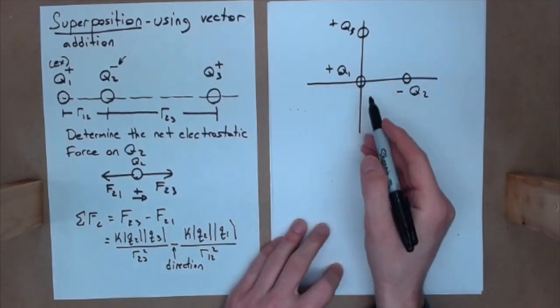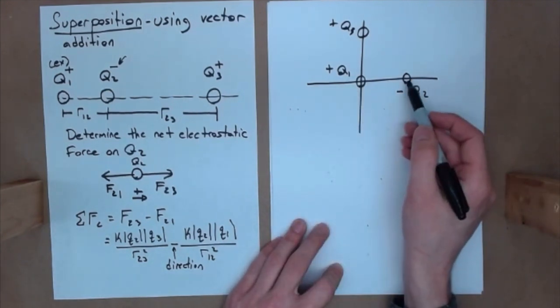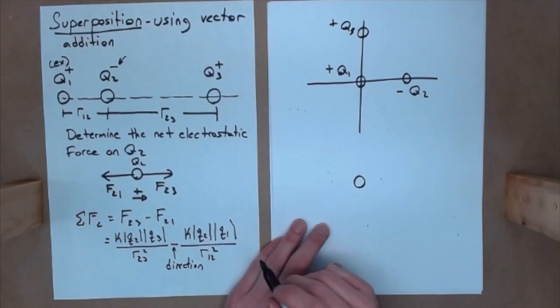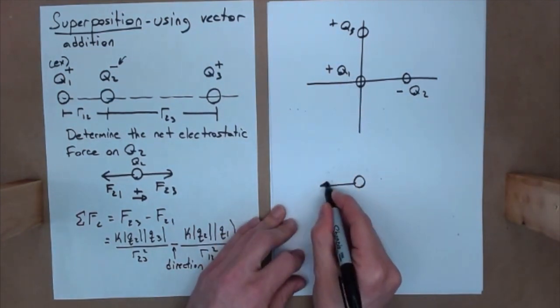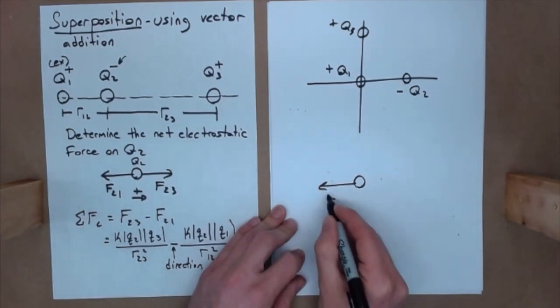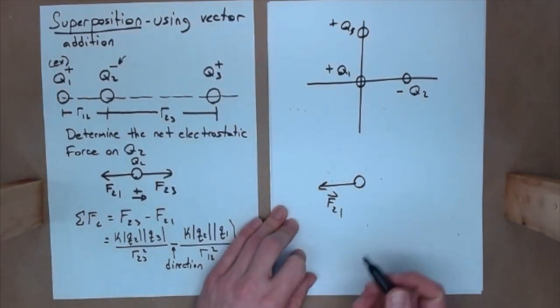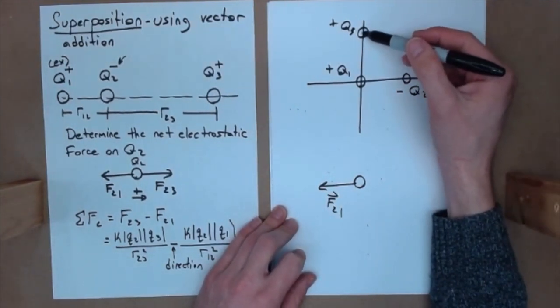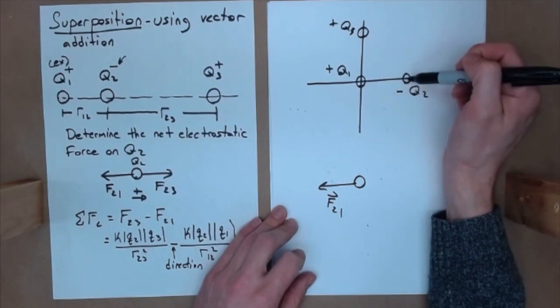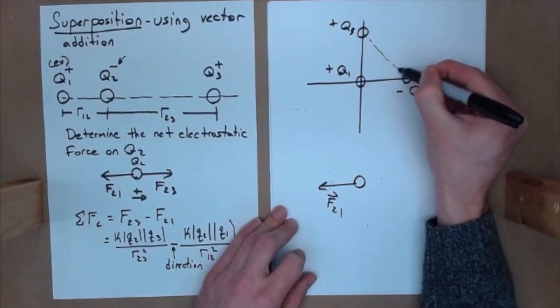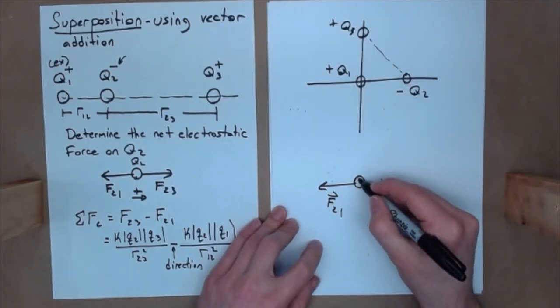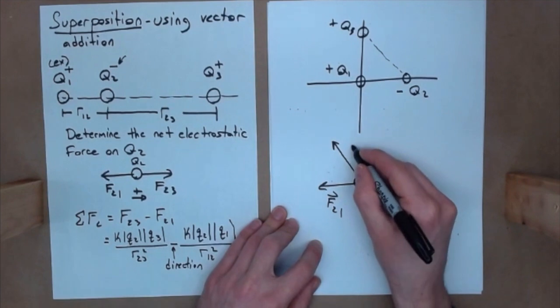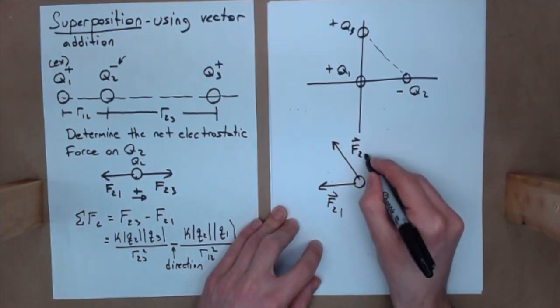Well, suppose now we're interested in Q2, my free-body diagram. Well, opposites attract. So, here to the left, I have F2,1. Okay. Then, this makes things a little bit interesting. Opposites, again, attract. So, I have some sort of a line from here to here. I'm ignoring this one again. And so, I need to draw my force kind of like this. F2,3.